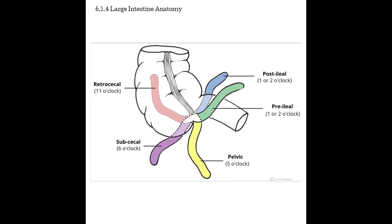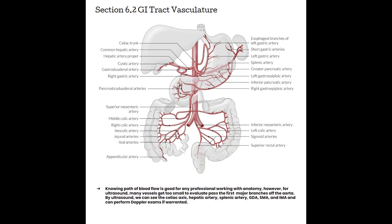To round out the anatomy, we're going to talk briefly about the GI tract vasculature in section 6.2. There are a ton of blood vessels responsible for bringing blood into the GI tract. Not all of these are significant by ultrasound, but it is important to understand what blood vessels bring blood in and how these organs drain their blood.